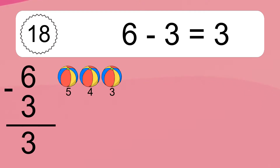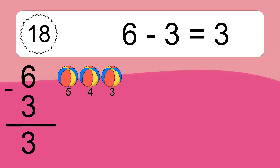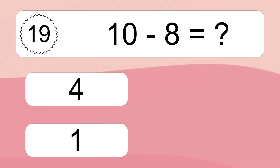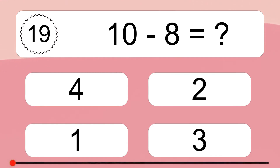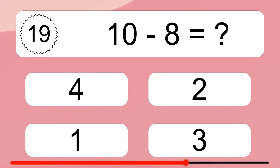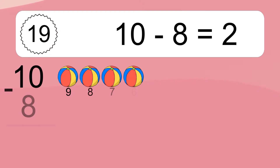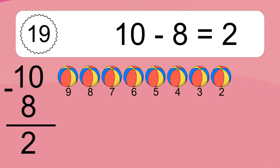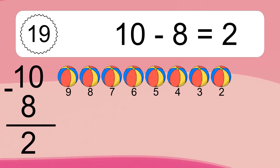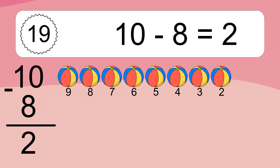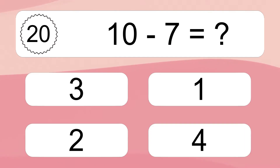6 minus 3 equals 3. Let's count it: 5, 4, 3. 10 minus 8 equals what? 10 minus 8 equals 2. Let's count it: 9, 8, 7, 6, 5, 4, 3, 2.